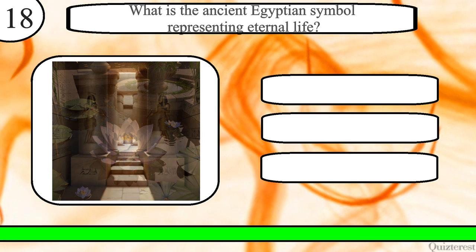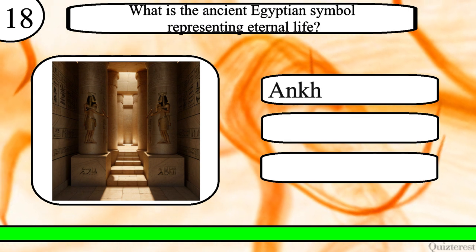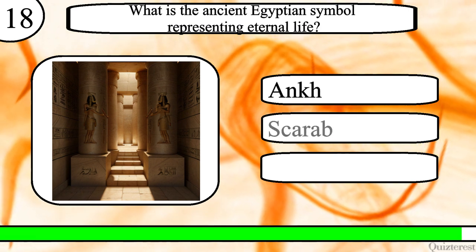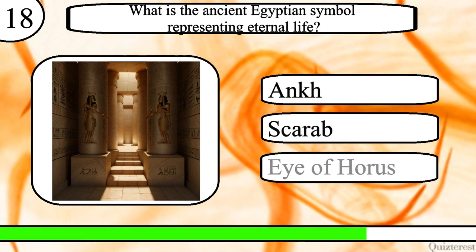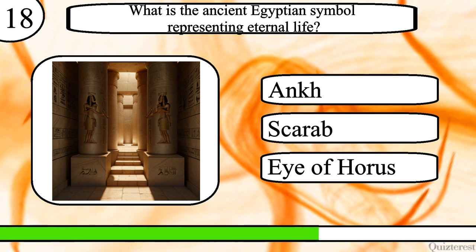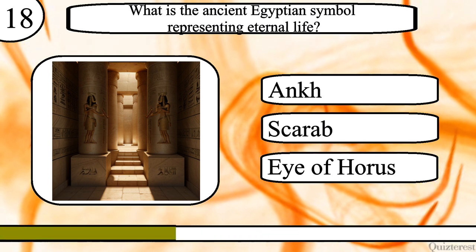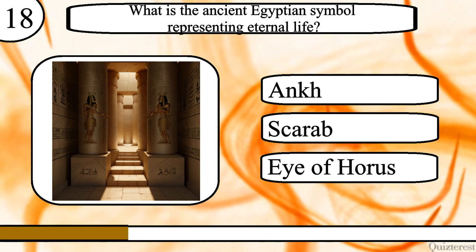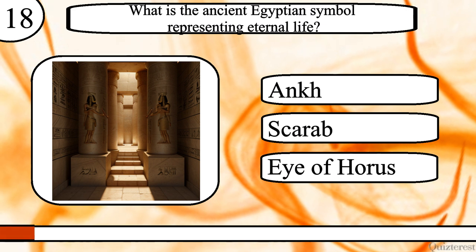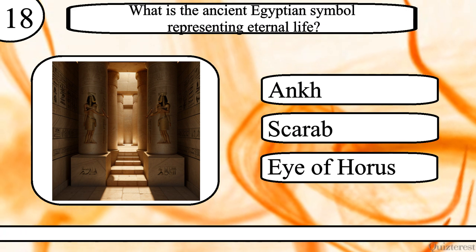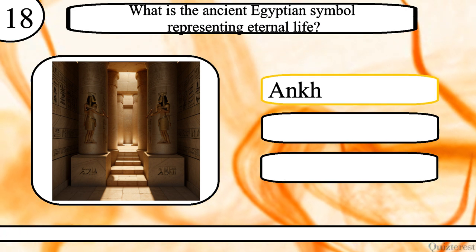Question 18. What is the ancient Egyptian symbol representing eternal life? Ankh, scarab or Eye of Horus? The correct answer is Ankh.